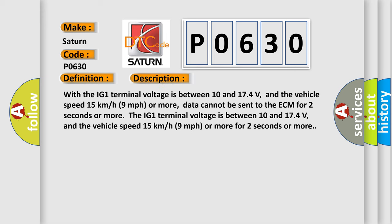And now this is a short description of this DTC code. With the IG1 terminal voltage is between 10 and 174 volts, and the vehicle speed 15 kilometers per hour or 9 miles per hour or more, data cannot be sent to the ECM for 2 seconds or more. The IG1 terminal voltage is between 10 and 174 volts, and the vehicle speed 15 kilometers per hour or 9 miles per hour or more for 2 seconds or more.